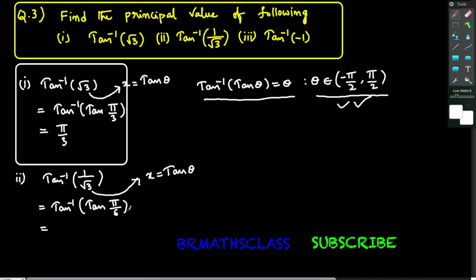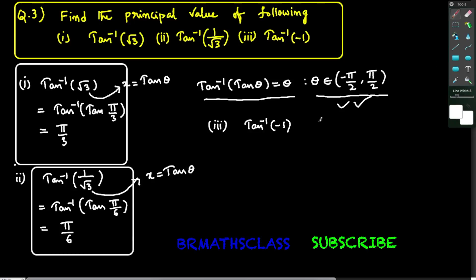The formula tan inverse of tan θ = θ works here, so tan inverse of tan(π/6) is π/6. Therefore, the principal value of tan inverse of 1 by root 3 is π/6.